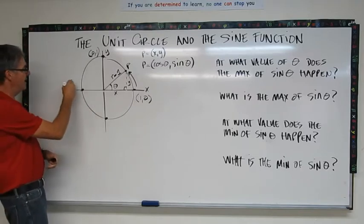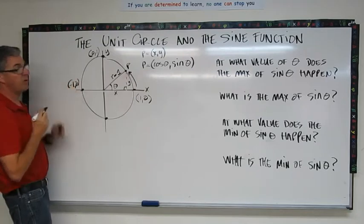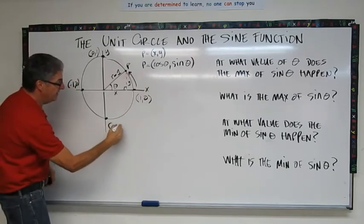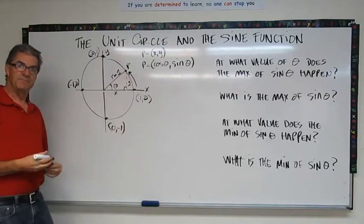If you got negative 1, 0 for that point, you're right. And if you got 0, negative 1 for that point, you're right.